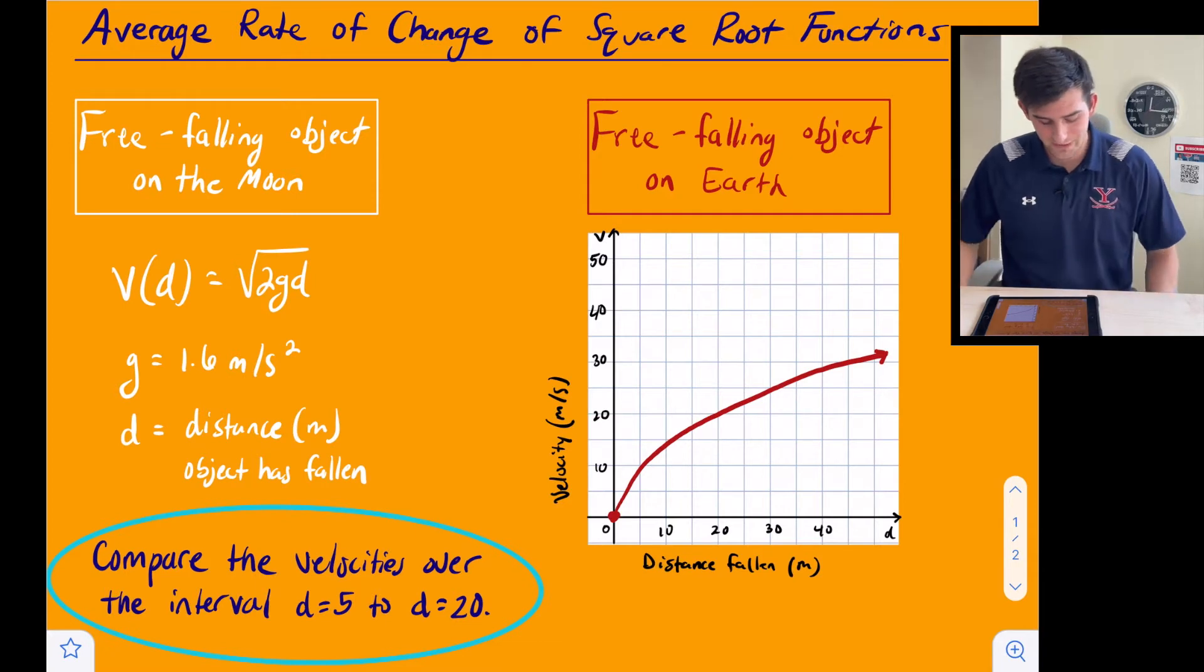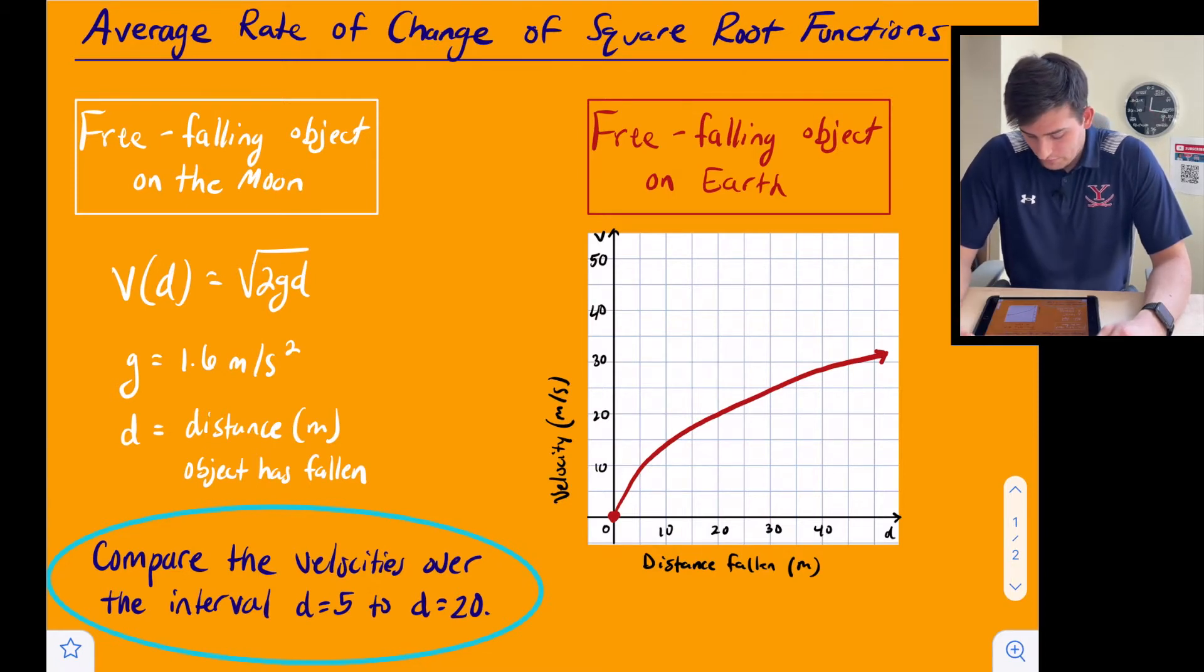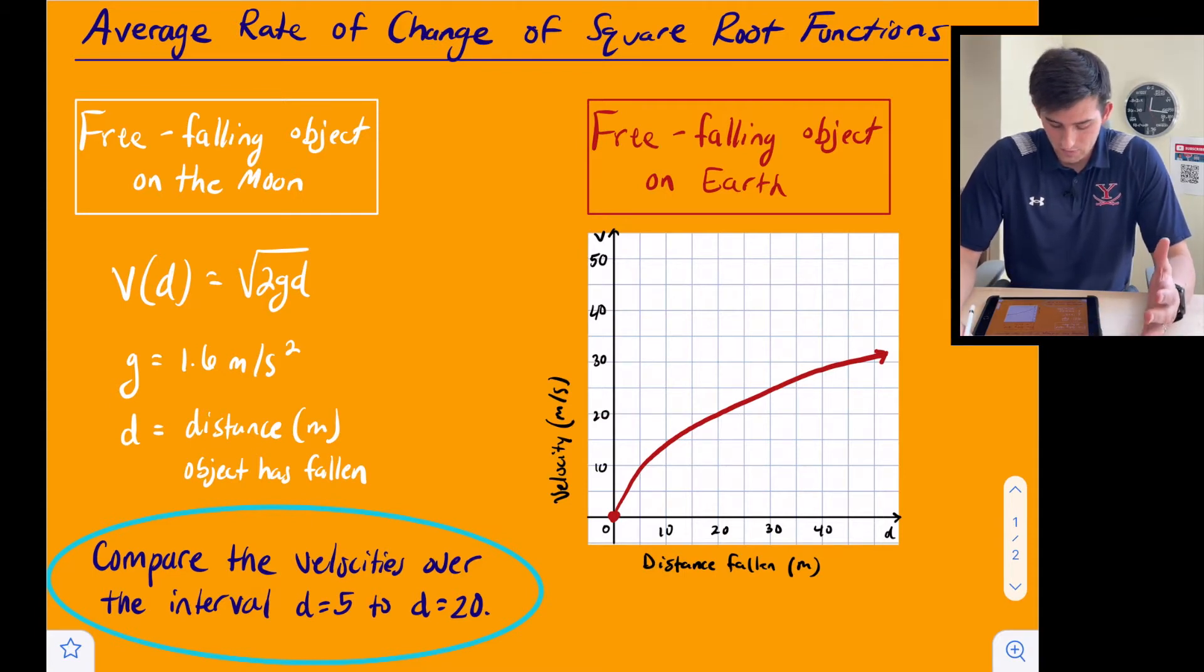On the left we have v of d equals the square root of 2 times g times d, where g is a constant and d is our distance that the object has fallen. G is 1.6 meters per second squared. On the right side we have our graph, and the x-axis is labeled with distance fallen and the y-axis is labeled with velocity.